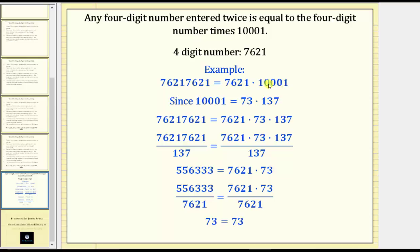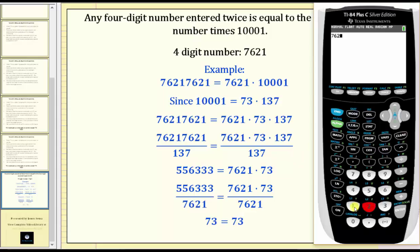And let's verify this with the calculator. 7621 times 10001 does give us 76217621.